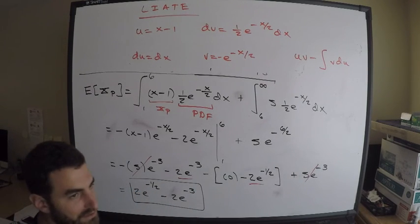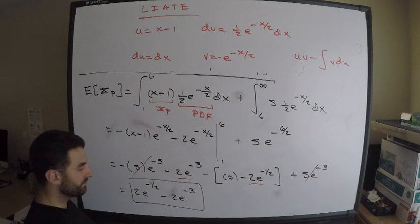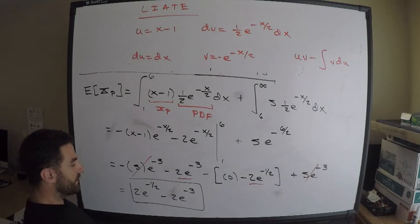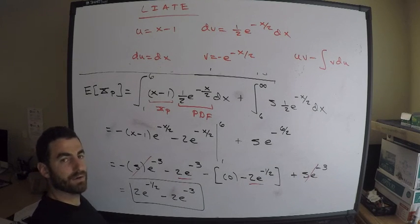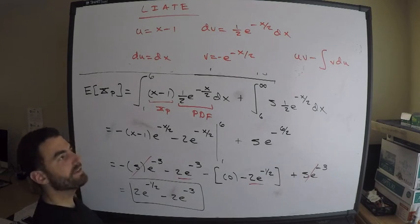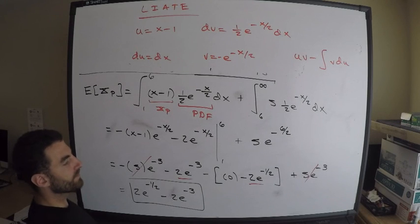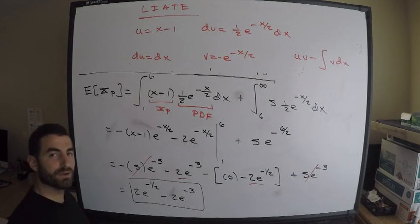The answer choices are given as exact values, so we leave the answer as two e to the negative one-half minus two e to the negative three. Hopefully this makes sense. I highly recommend writing down the definition of your new random variable — in this case the claim payment — as it makes the problem much easier. Thanks for the request!